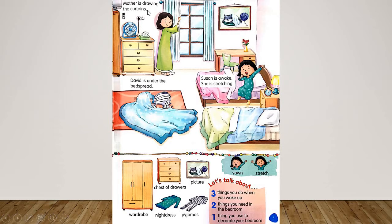Let's read the sentences together: Mother is drawing the curtains. David is under the bedspread. Suzan is awake — she is stretching. Now let's learn some vocabulary words.